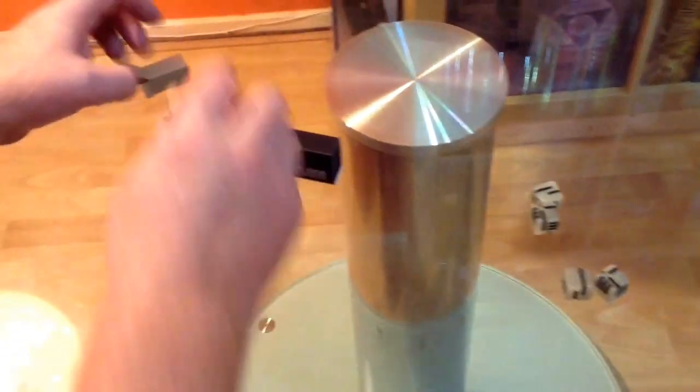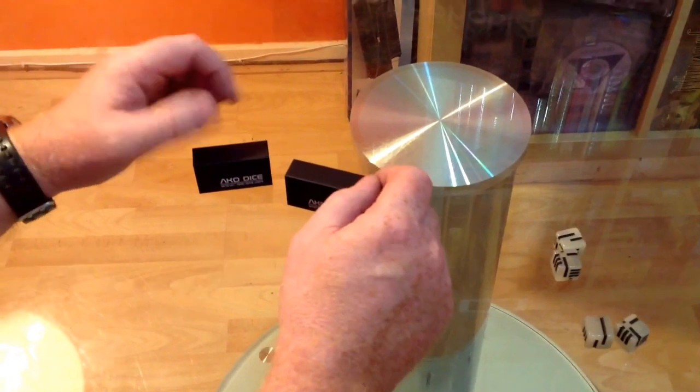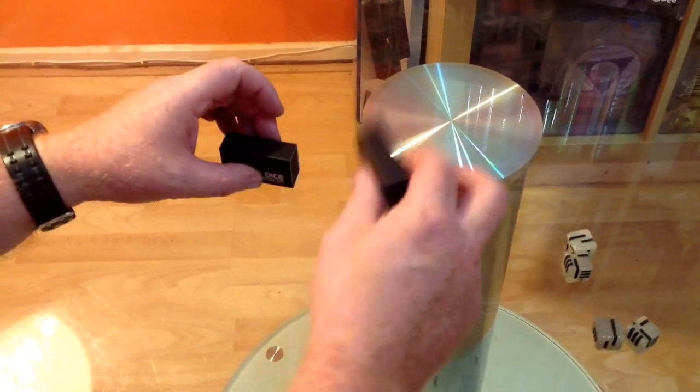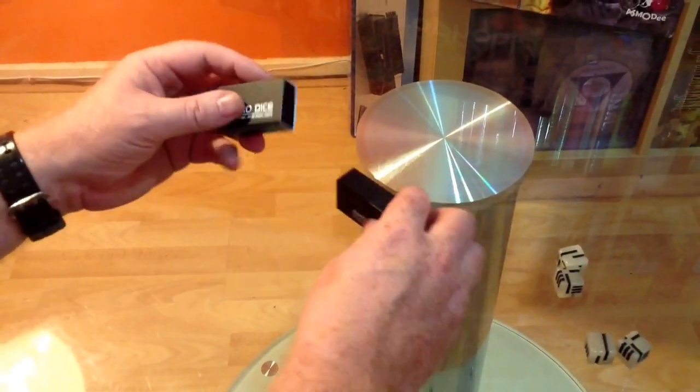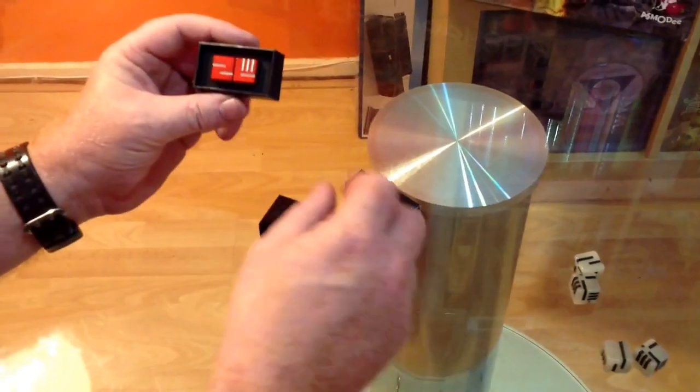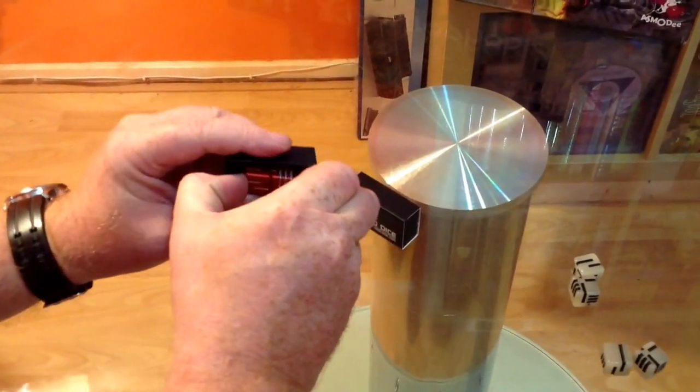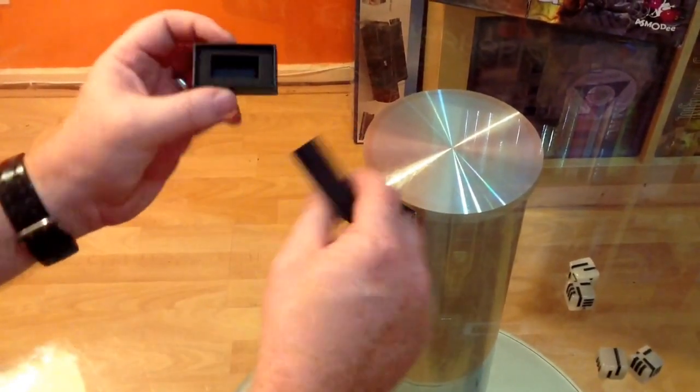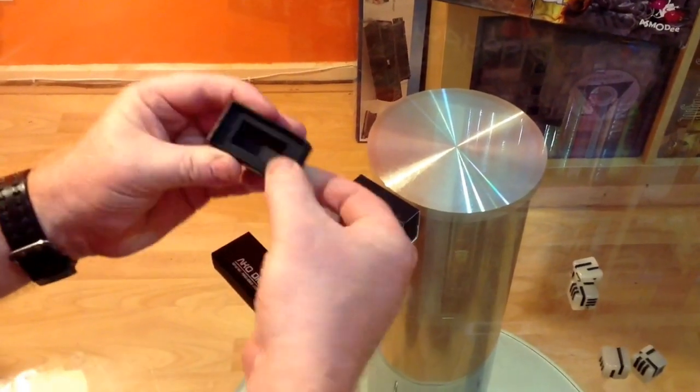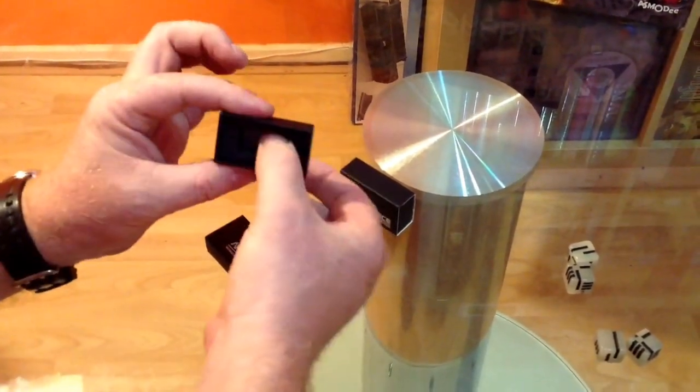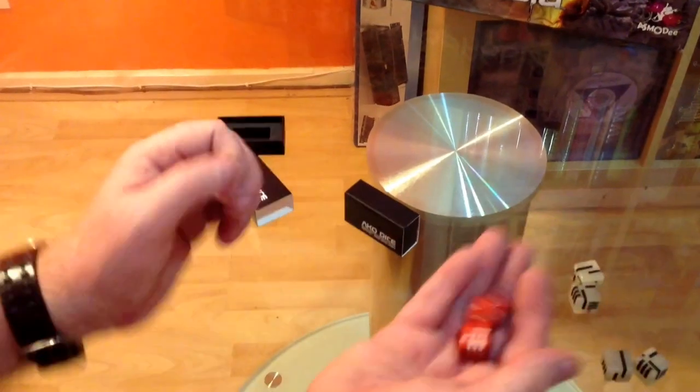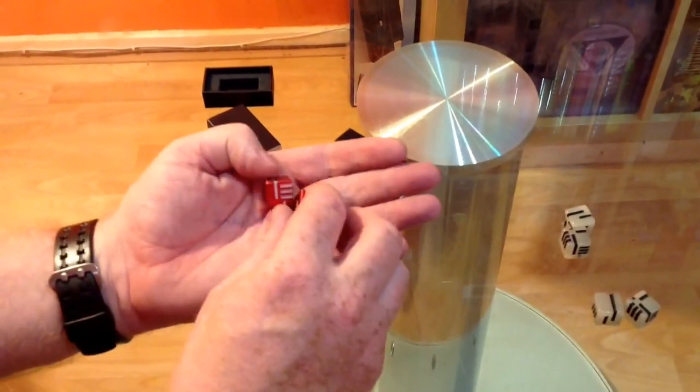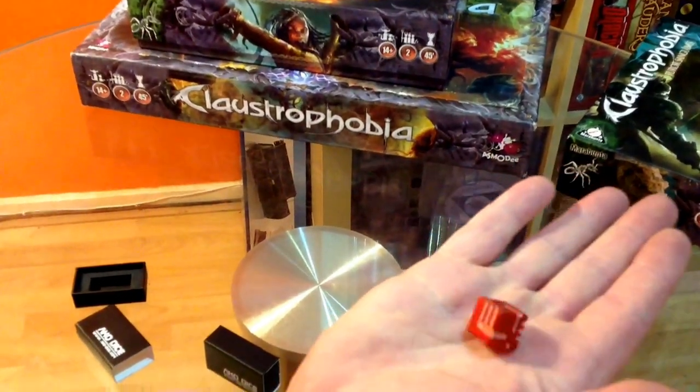Now, let's get to the dice that I ordered. I ordered brass and the red ones. Now, I can tell that's the brass cos it's a lot heavier. Let's see the nice red ones, and there's the red. Good little presentation box, with some thick, dense rubber there that goes around them. And these have got a good weight to them. You can see these well enough.